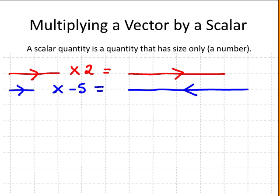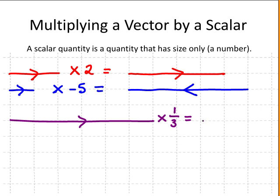Take a third example. Multiplying the vector by a third makes it 3 times shorter. Since we multiplied by a positive scalar, the direction of the vector remains the same.